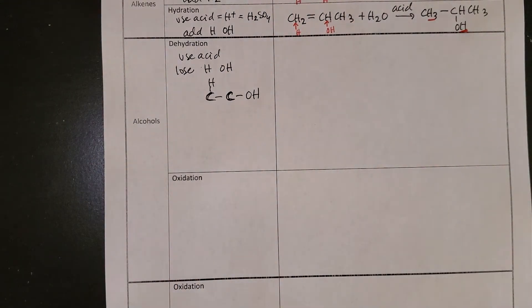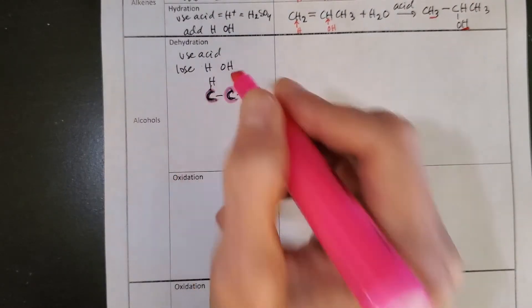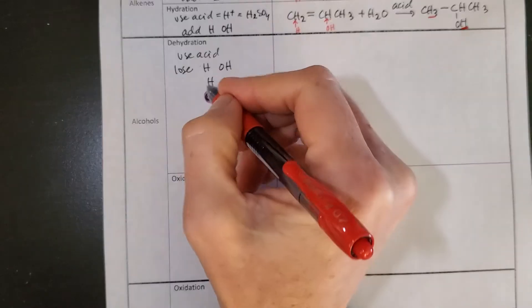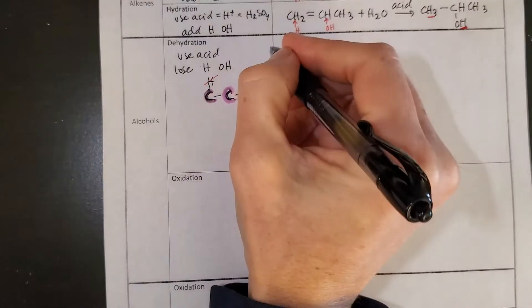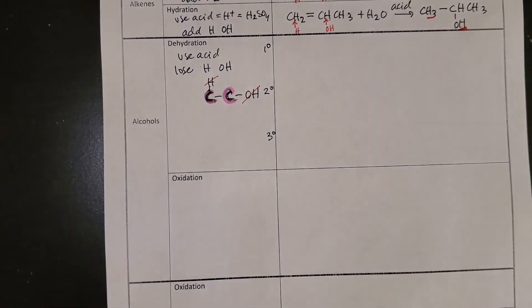This is going to be our pattern that the carbon connected to the hydroxyl and its neighbor are the two atoms that each lose something. We will lose an OH and an H. So we're going to check out for dehydration, primary alcohols, secondary alcohols, and tertiary alcohols.